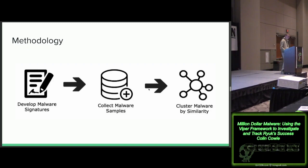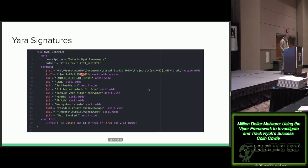My research methodology started with developing Yara rule signatures around Ryuk ransomware, then doing threat hunting on VirusTotal and other platforms like hybrid analysis, collecting malware samples, and finally putting everything into the Viper framework for clustering and similarity analysis. The Yara rule I've been using has been modified and tweaked over time. Strings like 'Hermes,' 'No System is Safe,' and 'VSSAdmin' have remained consistent throughout the full year they've been active and have helped generate many pattern matches on Ryuk ransomware.